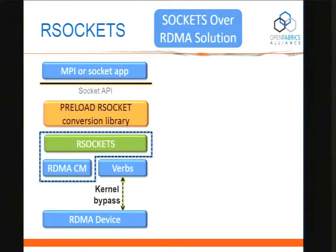The general solution for R sockets, just to refresh your memory, sits in user space. It's part of the RDMA CM, so it's part of that package. It does do kernel bypass. There is a preload library that's included — the preload library is part of the RDMA CM package. It's built and installed separately, and that allows some existing applications to run.